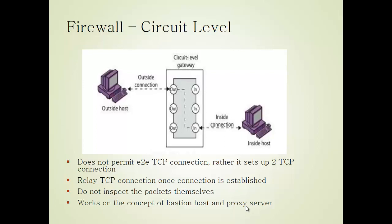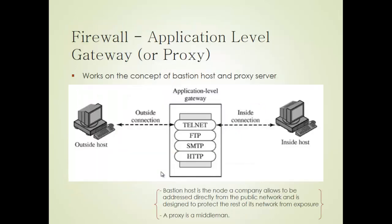Circuit level firewalls have two TCP connections: one between itself and a TCP user on an inner host, and one between itself and a TCP user on an outside host. It does not permit an end-to-end TCP connection; rather it sets up two separate TCP connections. Once a connection is established it relays the TCP segments but does not inspect the packets, working on the concept of a bastion host and proxy server.